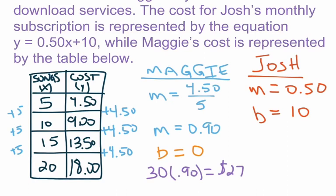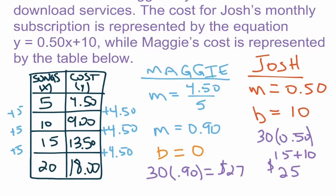For Josh, he pays only 50 cents per song but we add the $10 monthly subscription fee. So we take 30 times 0.50, which equals $15 for the songs, then add the $10 monthly fee, giving a total of $25. For 30 songs a month, Josh's subscription is the better value at $25 versus Maggie's $27. If downloading fewer songs — maybe 20 or less — Maggie would likely have the better plan.